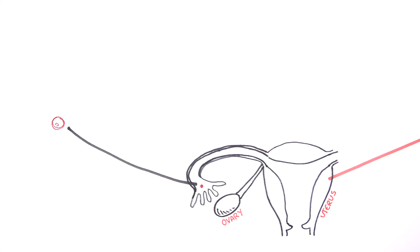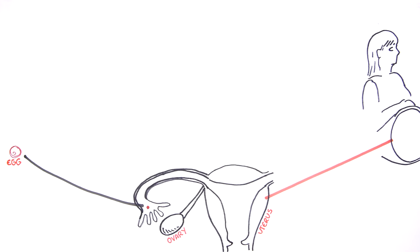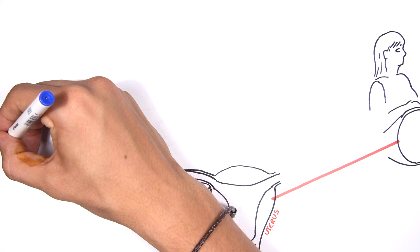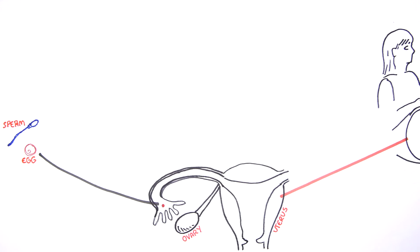Initially, the egg that is released during ovulation carries the maternal DNA methylation pattern. The sperm that will fertilize the egg carries the paternal DNA methylation pattern.